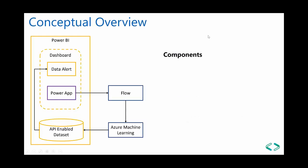To give you an overview of how these things stitch together: on the left we have Power BI with a dashboard embedded with a Power App for data entry. That Power App has a submit button that kicks off a Flow and sends data to Azure Machine Learning for scoring. The Flow then pushes data back into an API-enabled dataset for real-time feedback, so you can visualize new data as it's entered. You can also hook up a data alert to further kick off another Flow to automate the process further.